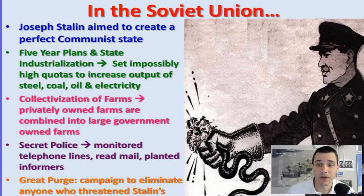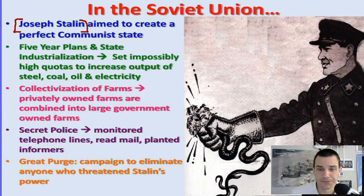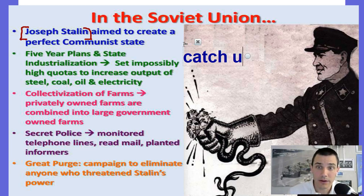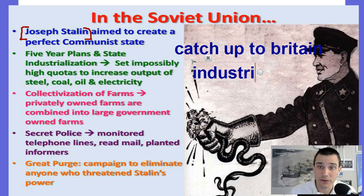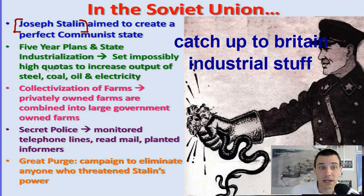In the Soviet Union, Joseph Stalin comes to power in the Communist Party and gets the Soviet Union on the path to what's known as strong communism. He puts in what's known as five-year plans and state industrialization. He wanted to catch up to Britain, the United States, and other Western powers as far as industrial capacity — producing goods, having technology, military capability.